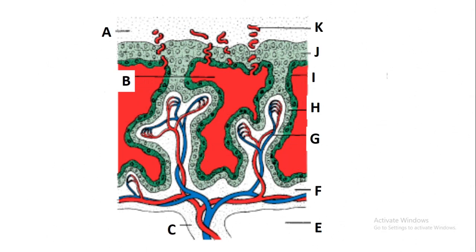In the next diagram we are still looking at week 3 of embryonic development. This is where the syncytiotrophoblast and cytotrophoblast have penetrated through the walls of the uterus, and the lacunae are now capable of interacting with the sinusoid capillaries of the mother. Let's look at A.